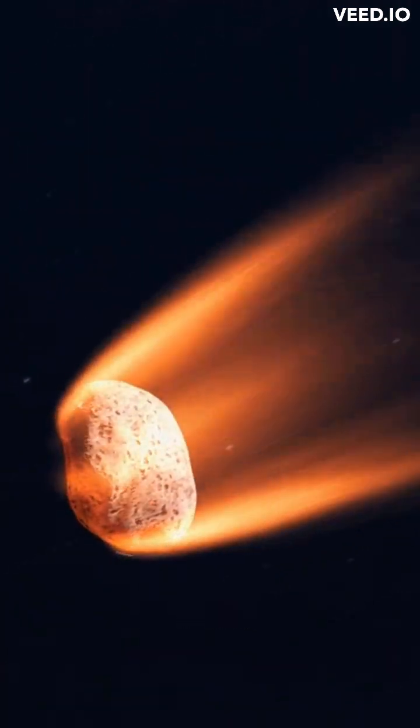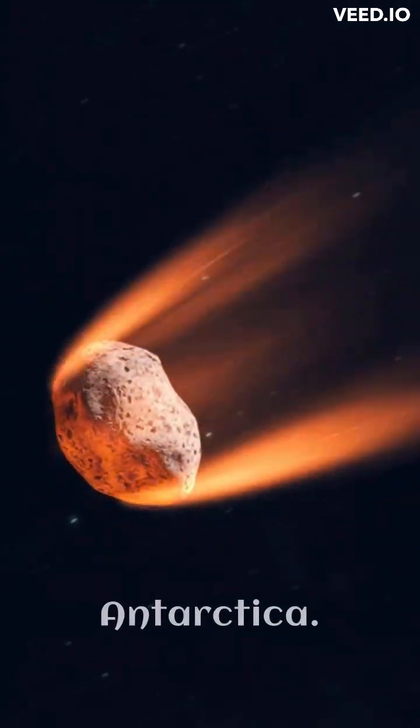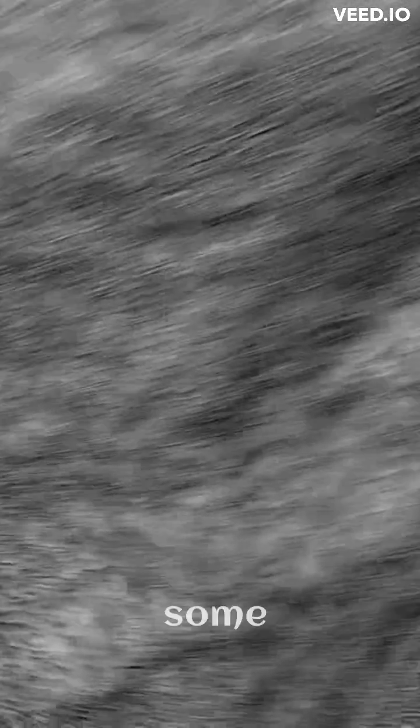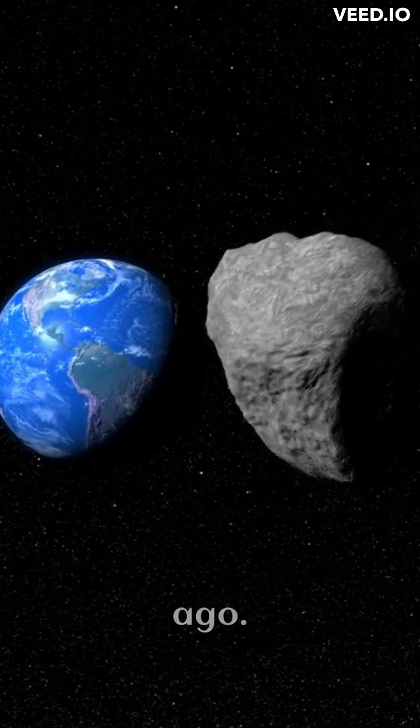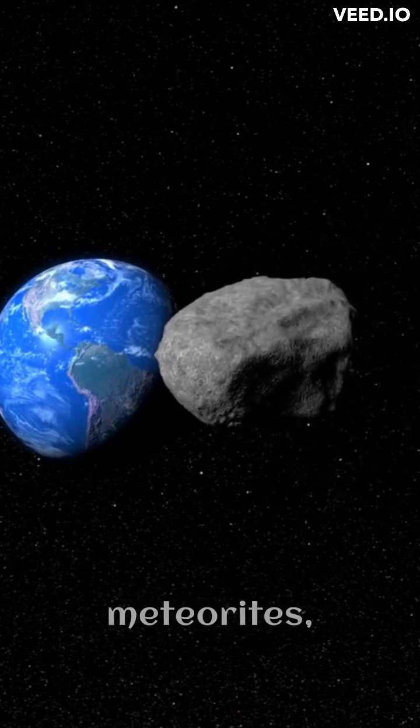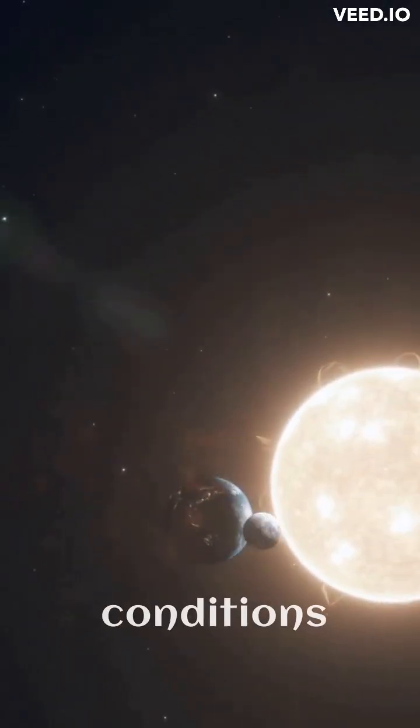Meteorites can be much easier to spot in cold, icy deserts such as the frozen plains of Antarctica. Meteorites that fall to Earth represent some of the original diverse materials that formed planets billions of years ago. By studying meteorites, we can learn about early conditions and processes in the solar system's history.